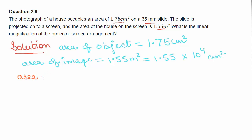Area of magnification is equal to area of image divided by area of object.